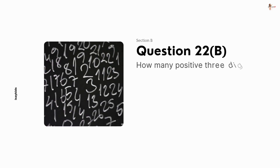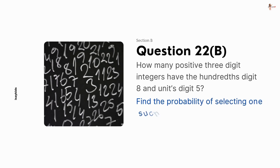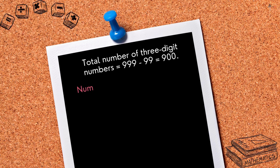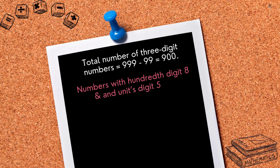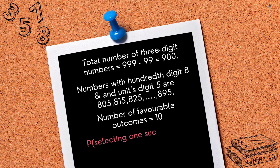How many positive 3-digit integers have the 100th digit 8 and units digit 5? Find the probability of selecting 1 such number out of all 3-digit numbers. Total number of 3-digit numbers is 999 minus 99, that is 900. Numbers with 100th digit 8 and units digit 5 would be 805, 815, 825, and so on till 895. So, number of favourable outcomes would be 10. Probability of selecting 1 such number would be 10 upon 900, that is 1 upon 90.